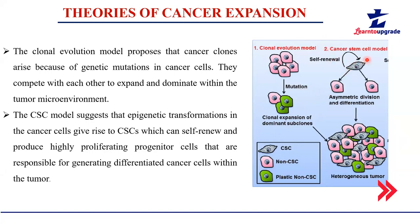The cancer stem cell model tells us that within a group of cancerous cells, there is a very small subpopulation of cancer stem cells — shown here in gray. These cancer stem cells have an ability to self-renew and differentiate into many different types. Because of the presence of stem cells in the cancer cell population, cells can divide asymmetrically to form a heterogeneous group of cells containing many different types.